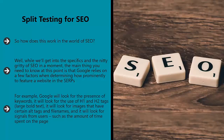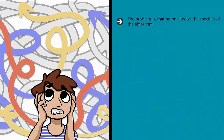For example, Google will look for the presence of keywords, the use of H1 and H2 tags, large bold text, images that have certain alt tags and file names, and signals from users such as the amount of time spent on the page. The problem is that no one knows the specifics of the algorithm. We know that Google likes sites that use keywords subtly, and our best guess is that the ideal keyword density is about 1–3%, meaning that the keyword appears 1–3 times in each 100 words. But we don't know precisely how many times Google wants us to repeat the phrase, or where the tipping point is.